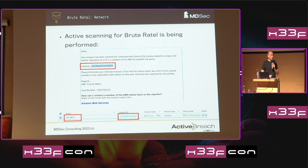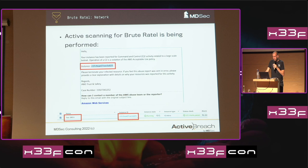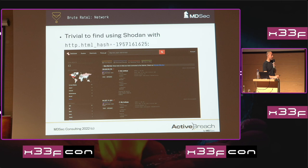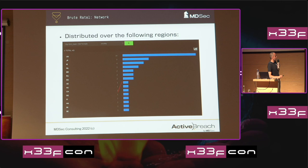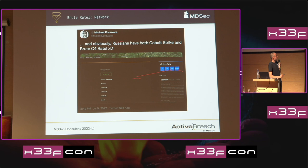I'm pretty confident people are scanning for BrutRetal servers — I had a BrutRetal server sitting in AWS that I wasn't actively using, and I got a takedown notice from Amazon. I thought it was one of our red team gigs, but it was the test BrutRetal instance. So some internet hero is scanning the internet and reporting all the BrutRetal instances. These are trivial to find with Shodan: if the default landing page is exposed, you can take the hash, pump it into Shodan, and find them. The majority seem to be in the US, with a couple in Russia — Russians apparently like to host both Cobalt Strike and BrutRetal on their infrastructure.